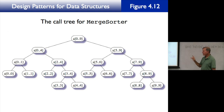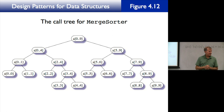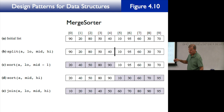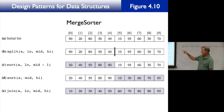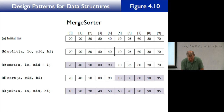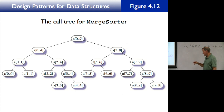Let's move on to figure 4.12. You guys know what a call tree is? It's a very useful tool for analyzing what function calls another function, or sometimes itself. So here in figure 4.10, this shows an array indexed from 0 to 9 with elements 90, 20, 80, 50, 40, 10, 95, 60, 30, 70. The question is how does the function call itself recursively — what are those function calls? We can figure it out by looking at the call tree.